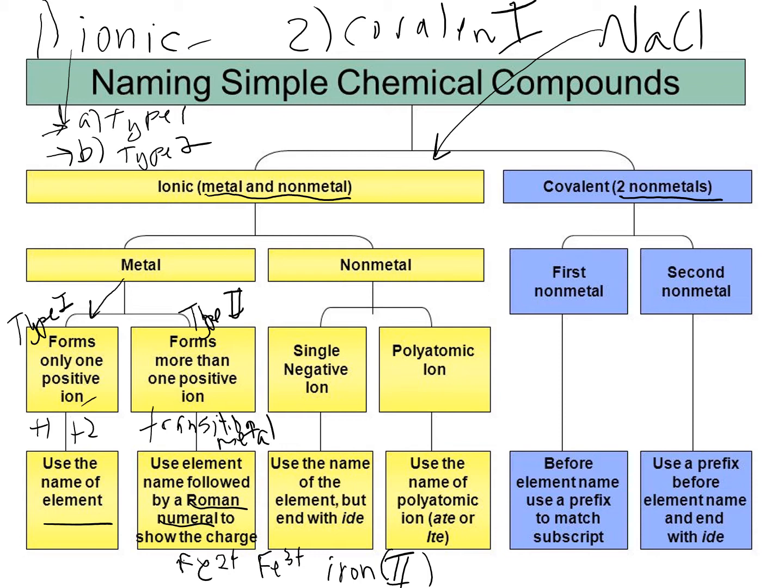To name the non-metal, you just name the element and change the ending to 'ide.' If it has a polyatomic ion, you have to memorize those, and you would just use that name for the polyatomic ion.